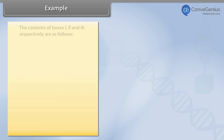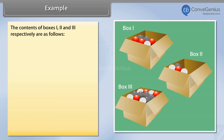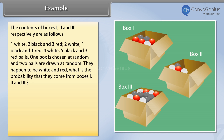Example. The contents of boxes 1, 2 and 3 respectively are as follows: 1 white, 2 black and 3 red; 2 white, 1 black and 1 red; 4 white, 5 black and 3 red balls. 1 box is chosen at random and 2 balls are drawn at random.